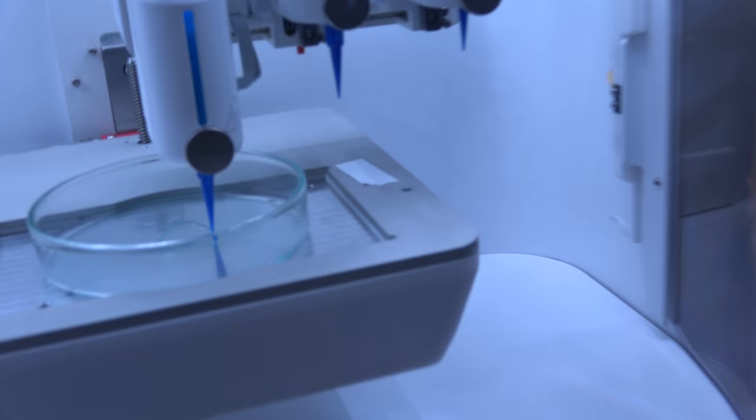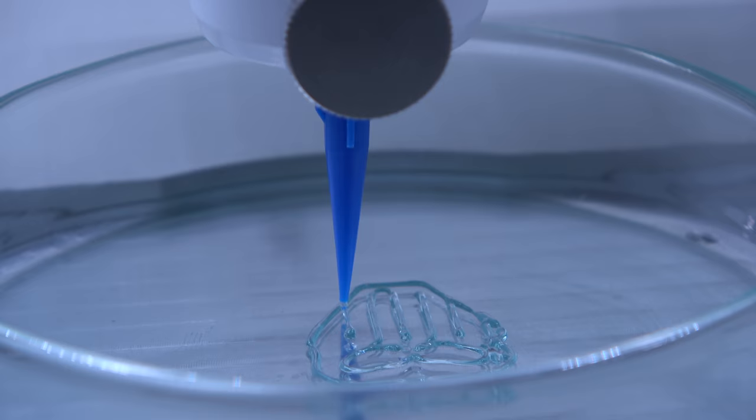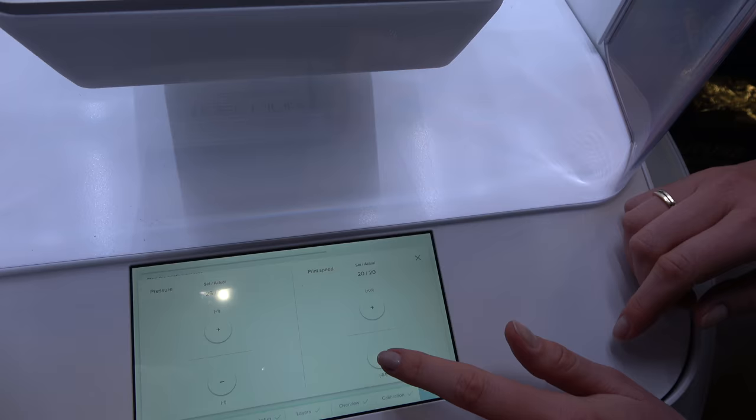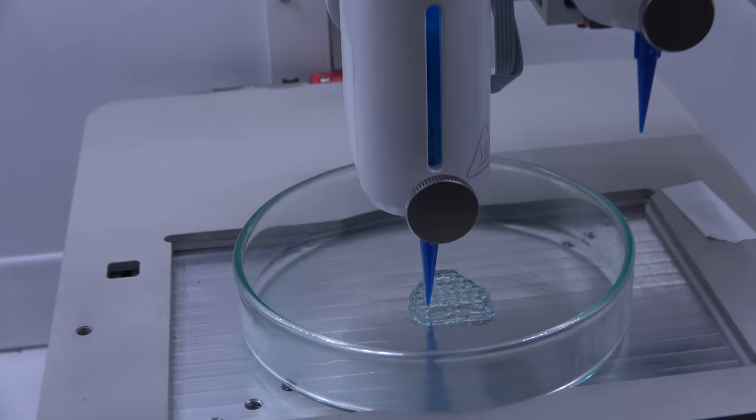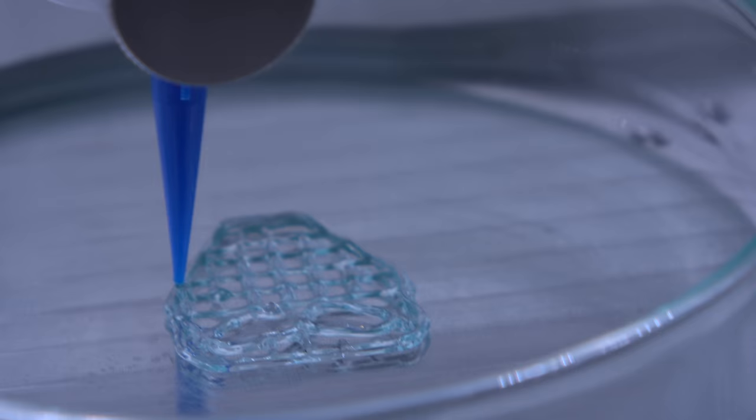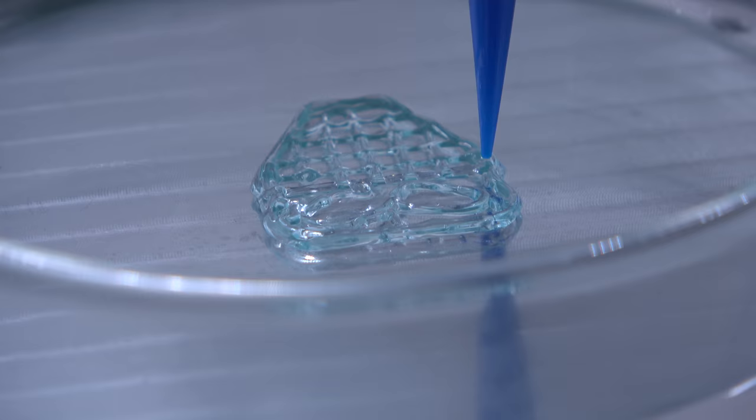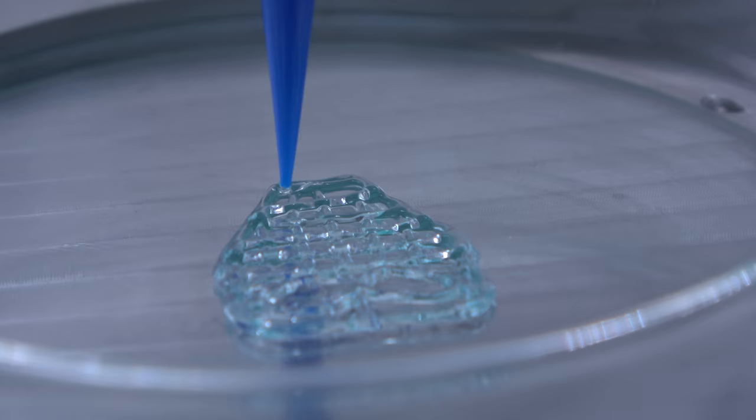And then when you're printing like this, you can see that it's going a little bit too fast. So then we can go in and also lower the print speed. And then you can also adjust the pressure. So if you want to have a little bit higher pressure or a little bit lower pressure, that's definitely possible to do during the printing.